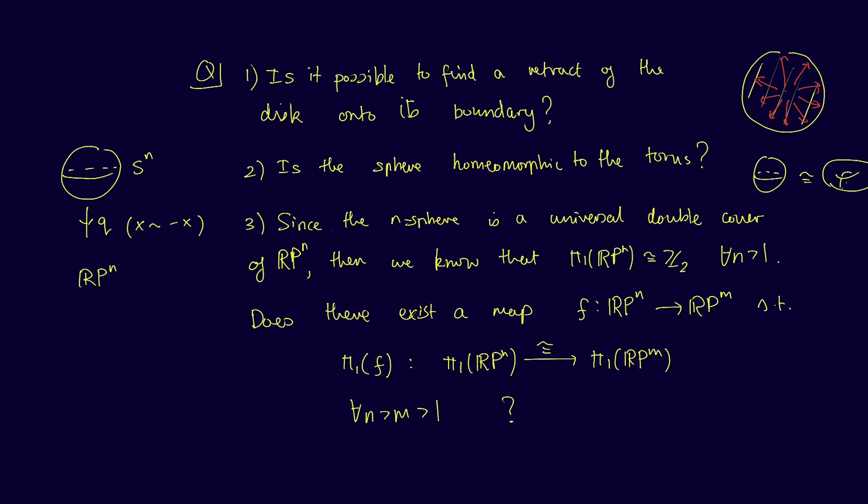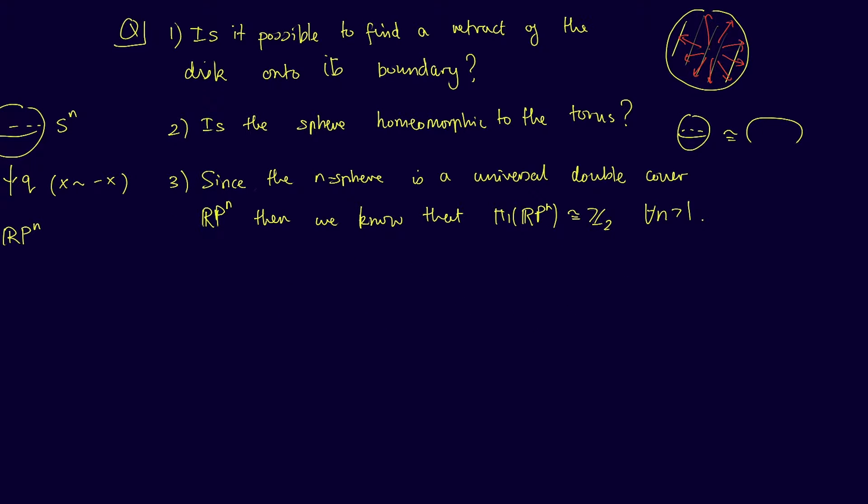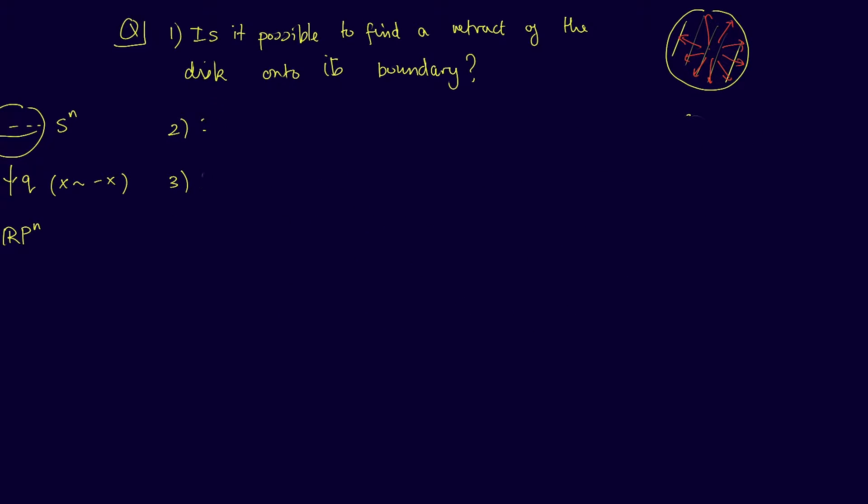So what do all these questions have in common? They can be answered using cohomology. Before we answer these questions, we'll build the theory up from scratch. Put simply, cohomology is a machine that turns topological spaces into algebraic objects. In doing so, we can then use algebra to solve topological problems. For example, existence of a topological object like a retract of the disc to its boundary then gives the existence of an algebraic object. Generally, existence of an algebraic object is more easily attacked than existence of a topological object.